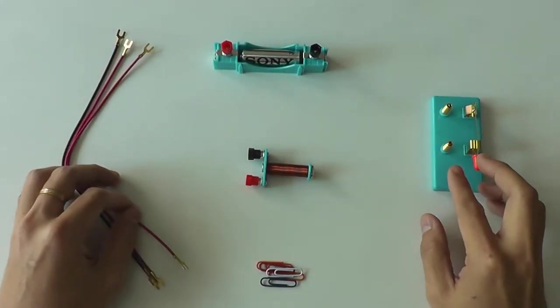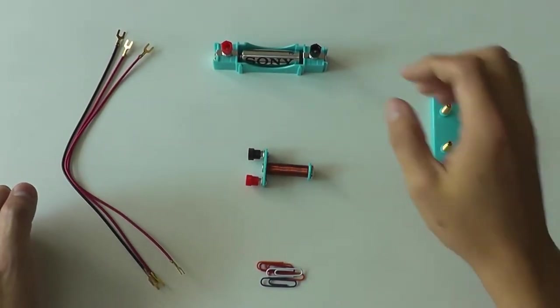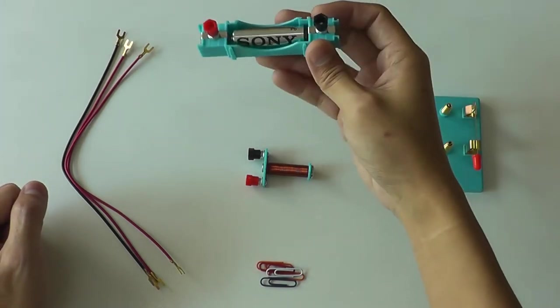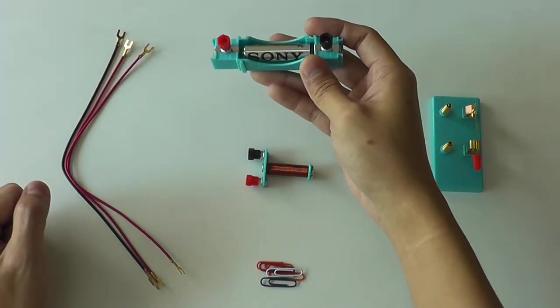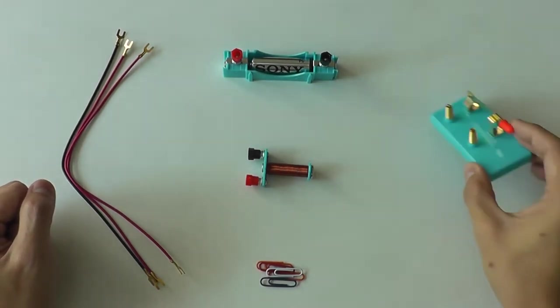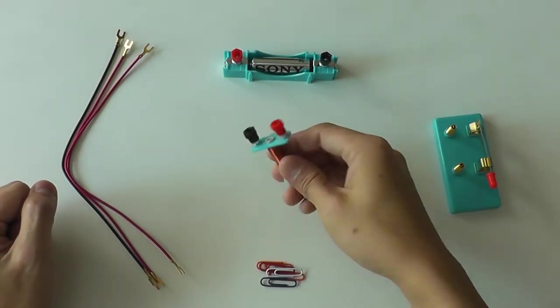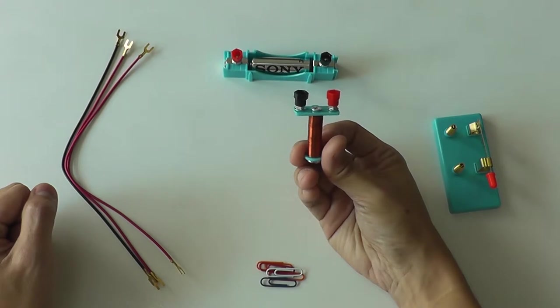In this video, I'm going to show you how to connect an electromagnet circuit. These are the things that we need. We need a battery in a battery holder, a switch, and I need this which is an electromagnet.